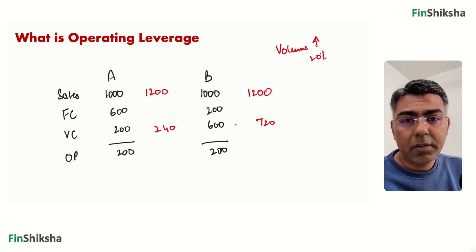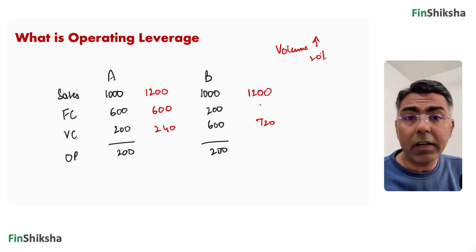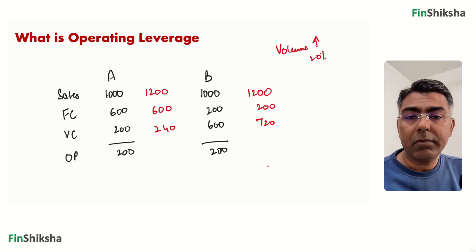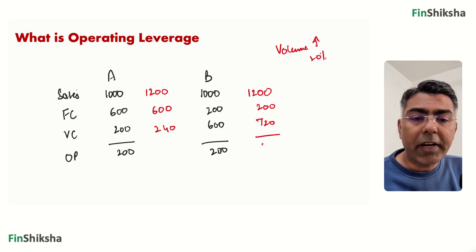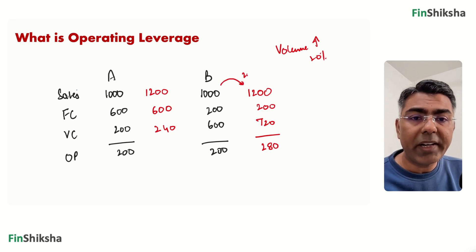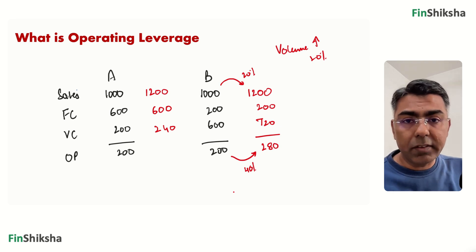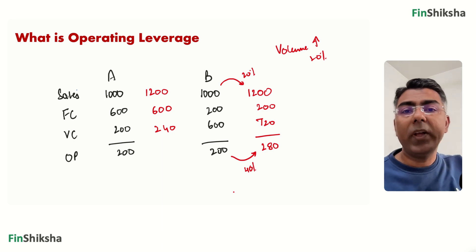Fixed cost remains fixed — that's the nature of the cost. It stays fixed for a particular capacity regardless of the level of capacity utilization. So fixed cost remains 600 for Company A and 200 for Company B. Look at what happens to profit: if you subtract and arrive at the number, Company B's operating profit becomes 280. Sales changed by 20%, but operating profit changed by 40% — that's the concept of leverage, a magnification in profit growth.